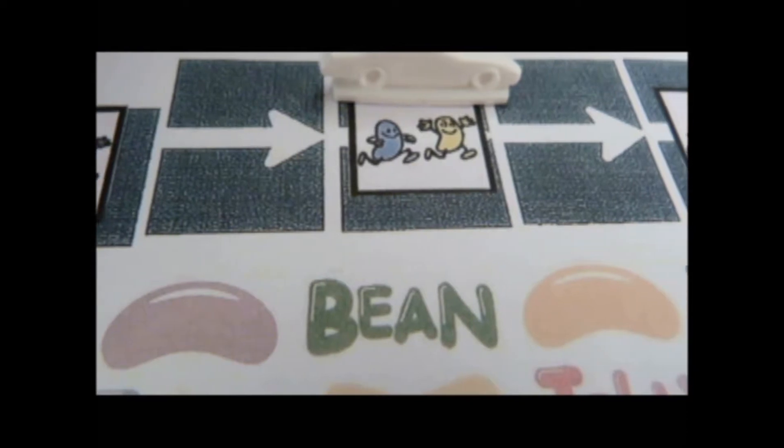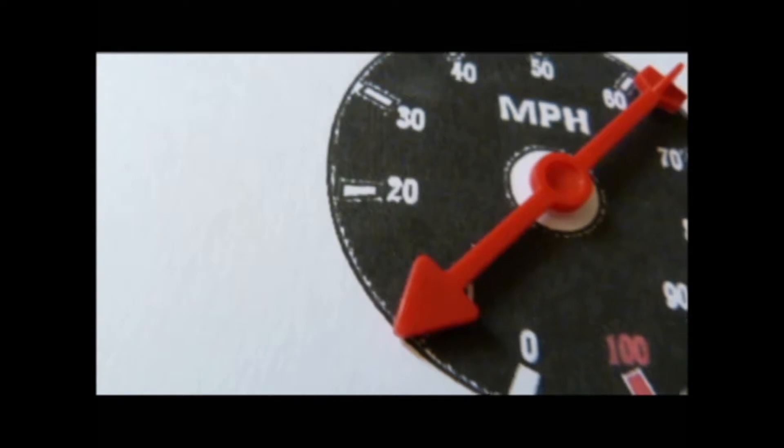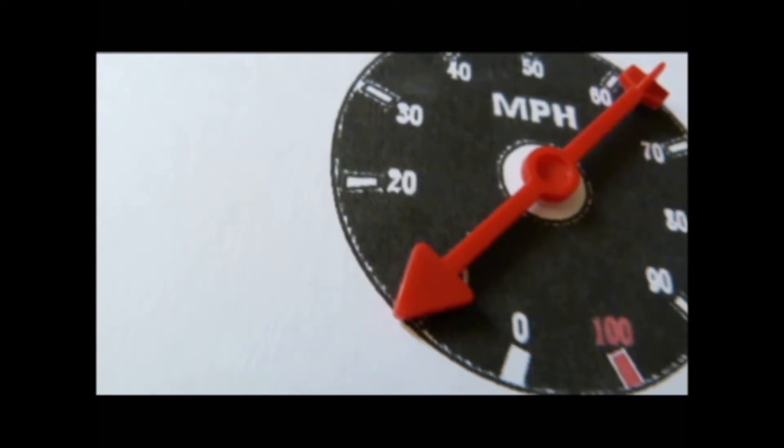But you lose ten points if you land on Jelly Beans with different colors. If you don't have ten points to lose, the other player gains ten points.